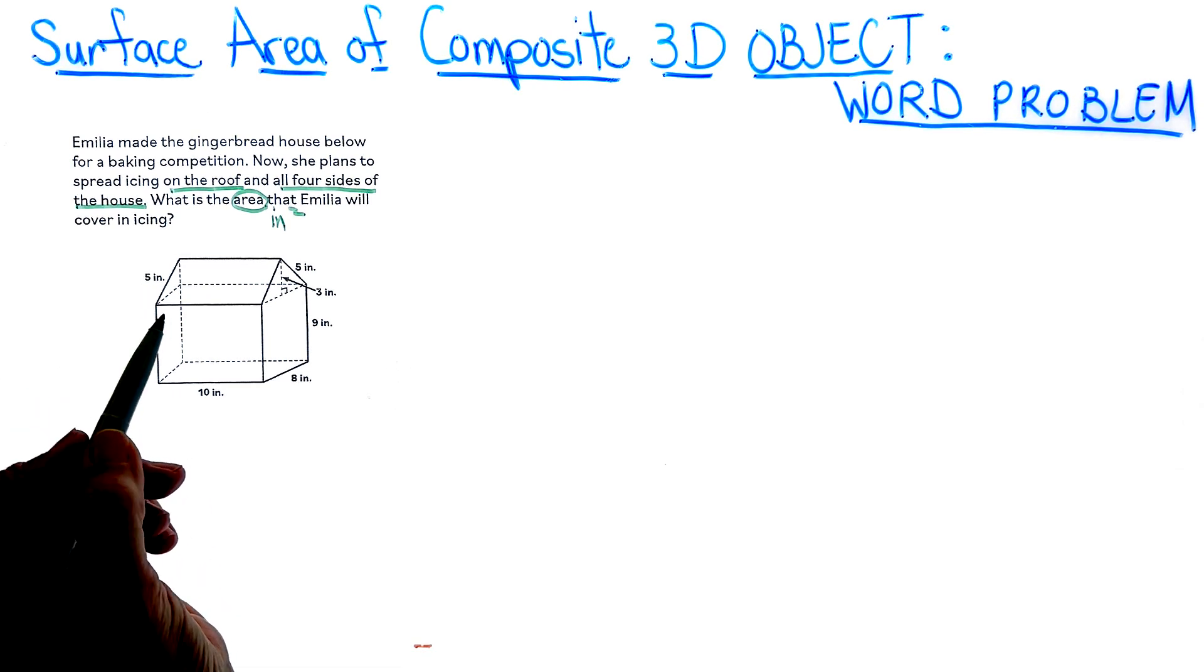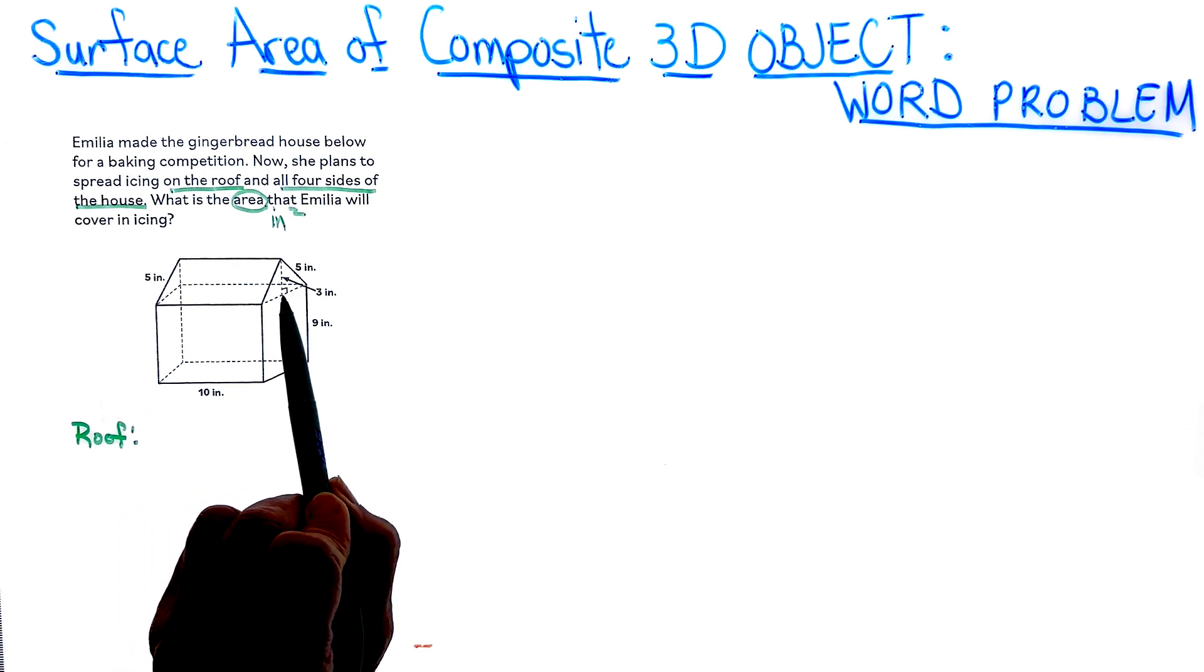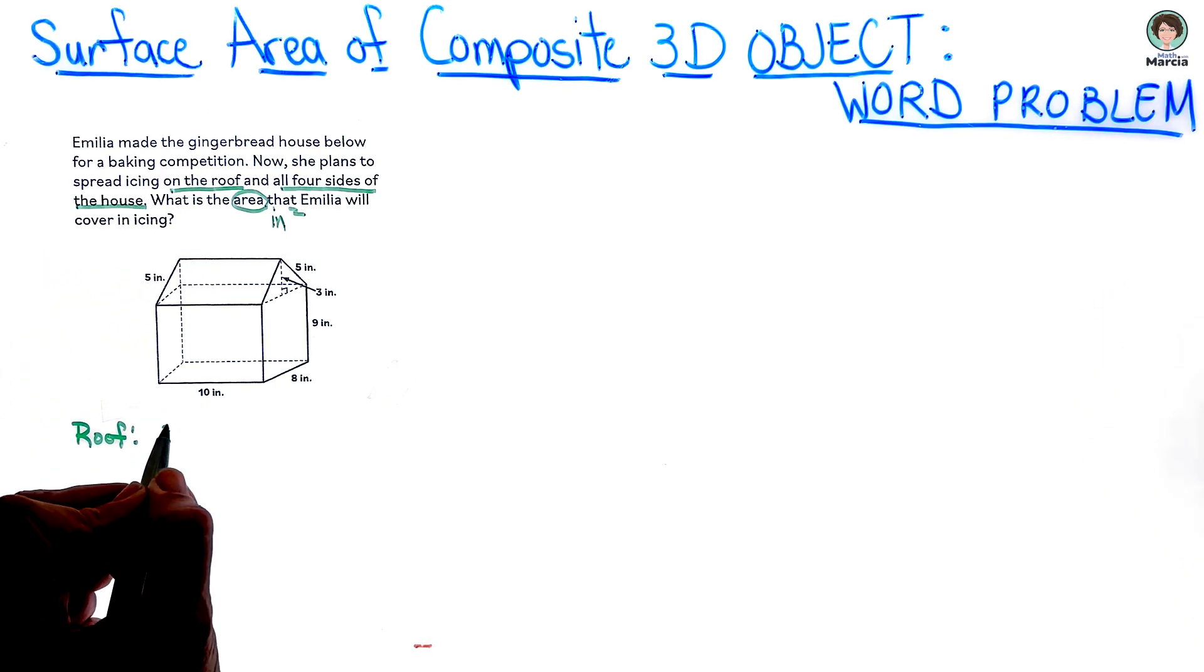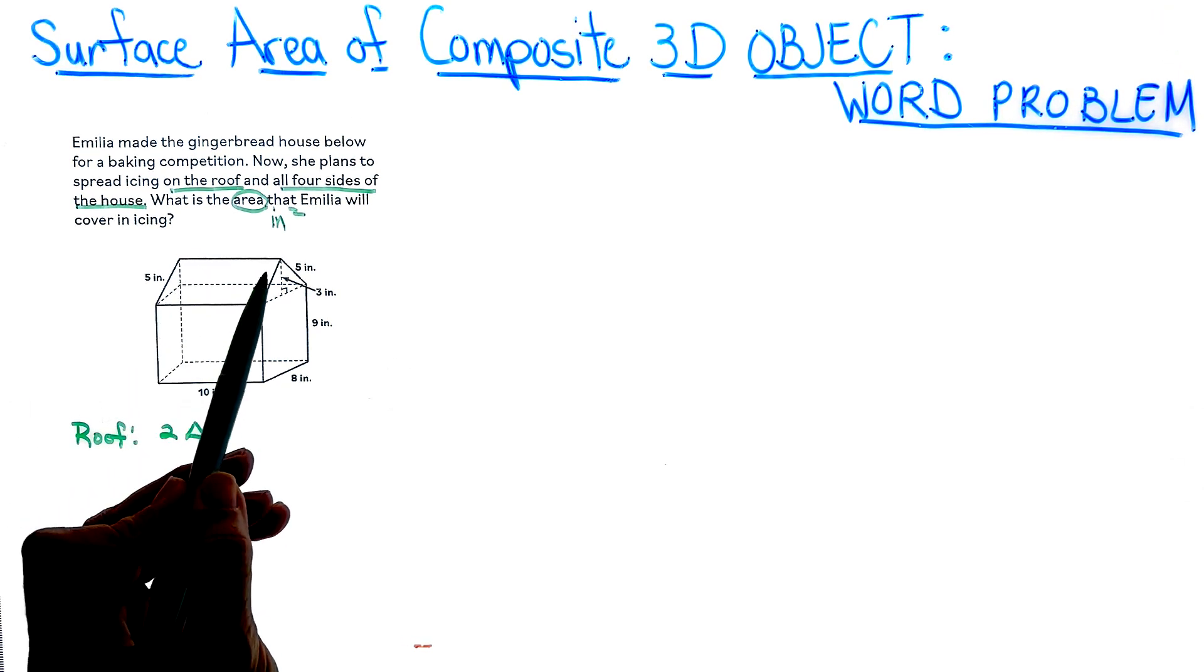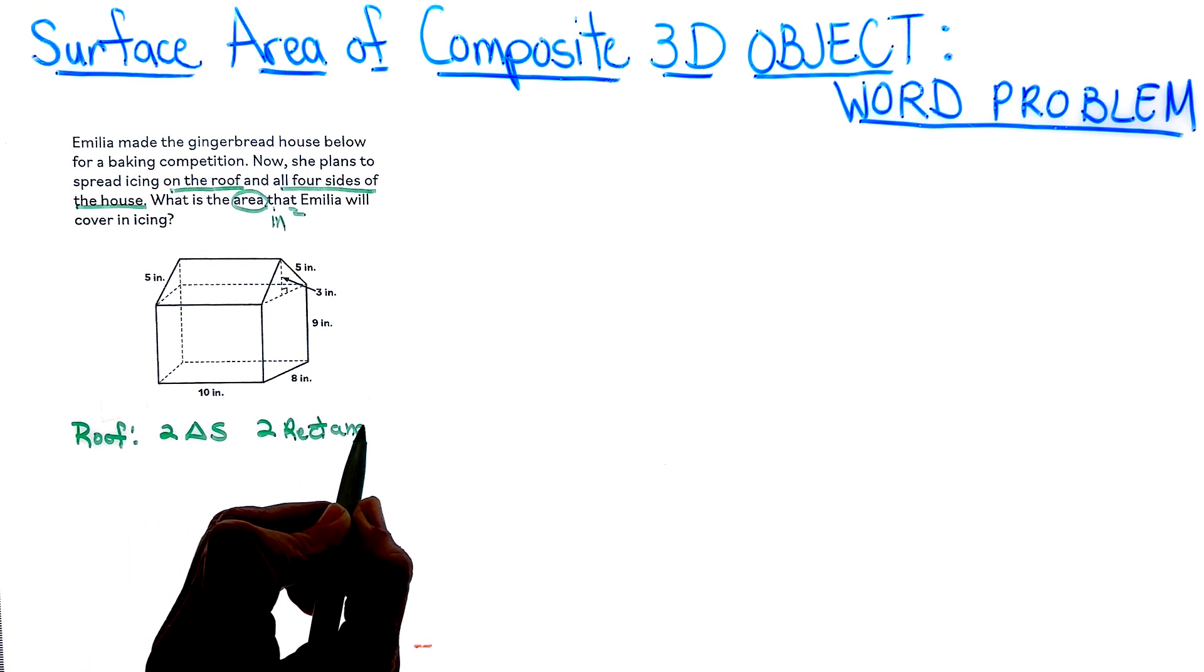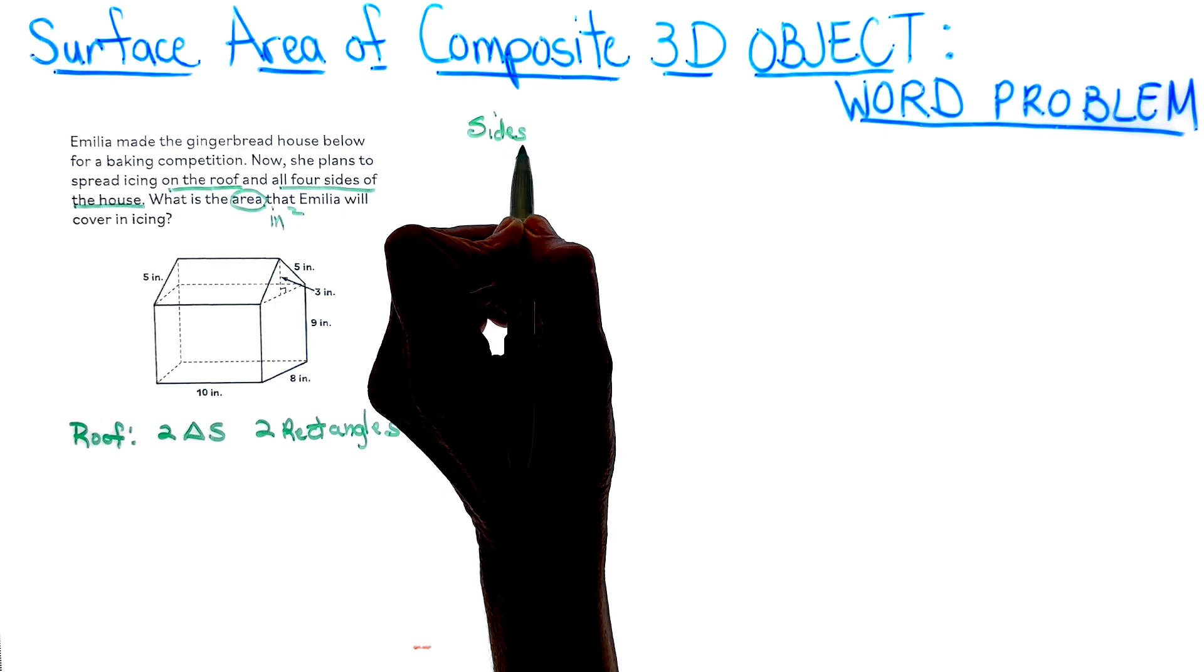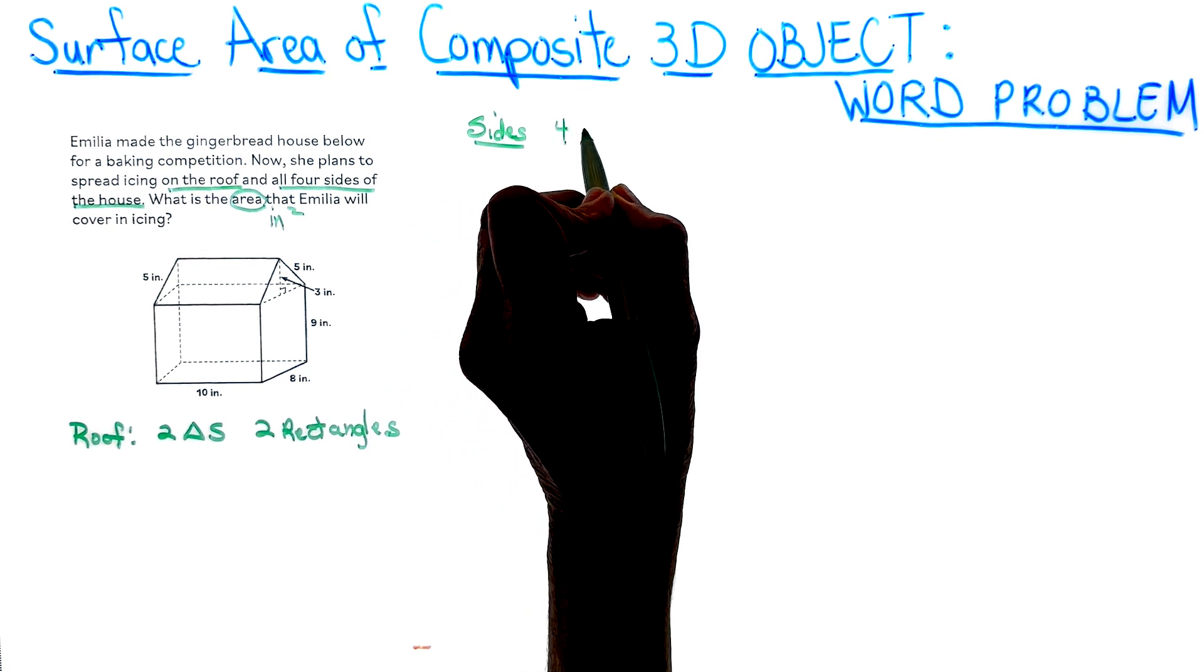So let's go ahead and talk about what shapes we see. I'm going to list them by the roof. Let's look at the roof. So I see I have a triangle here and I have a triangle on the other side that matches that. So I have two triangles for my roof. I also have a rectangle and I have a rectangle on the other side of this roof. So I have two rectangles. And now when we're talking about the sides of the house, notice we have one, two, three, four. We have four rectangles.